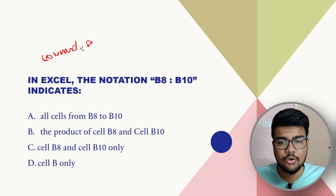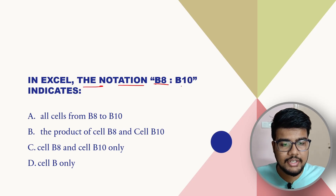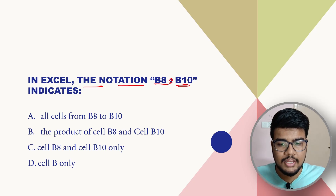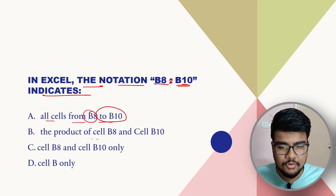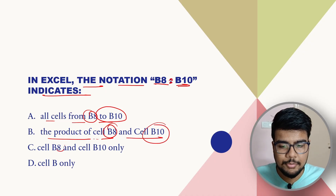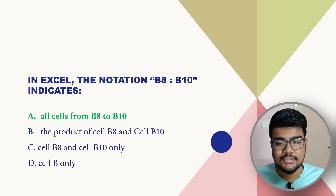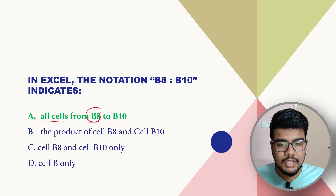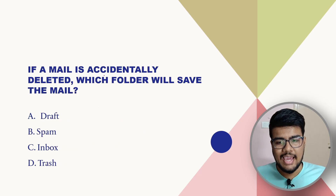In Excel, the notation B8:B10 indicates what? Is it all cells from B8 to B10, the product of cell B8 to B10, cell B8 and B10 only, or cell B only? The answer is all cells from B8 to B10 would be selected when you write this notation.